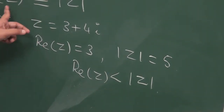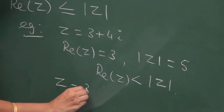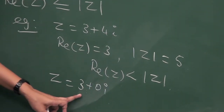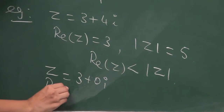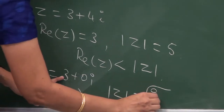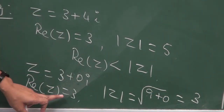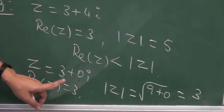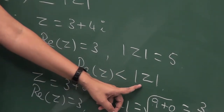Now in which case is Re(z) equal to |z|? Consider a purely real complex number: z equals 3, which can be written as 3 plus 0i. The real part of z is 3. The modulus of z is the square root of 9 plus 0, which equals 3. So in this case Re(z) equals |z|. If a complex number is purely real, then Re(z) equals |z|. In all other cases, Re(z) is less than |z|.